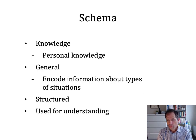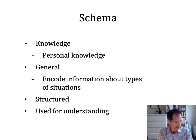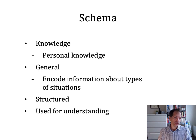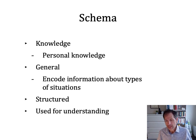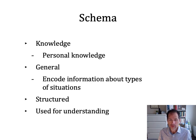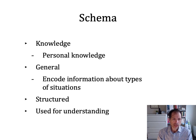So both the hierarchical model and the spreading activation model are kind of general purpose models that can encode information and relationships about objects and things and ideas and events — all sorts of semantic information. A schema, on the other hand, is a general knowledge structure that encodes information about types of situations.